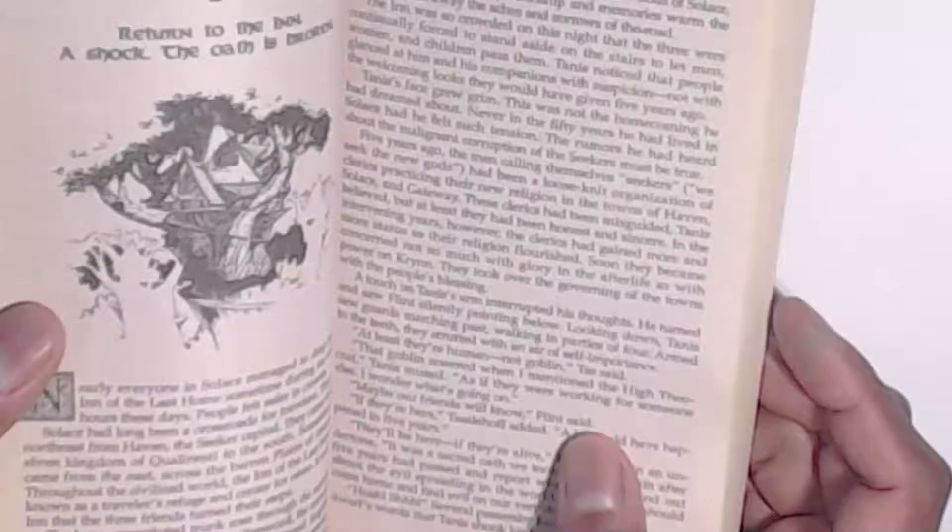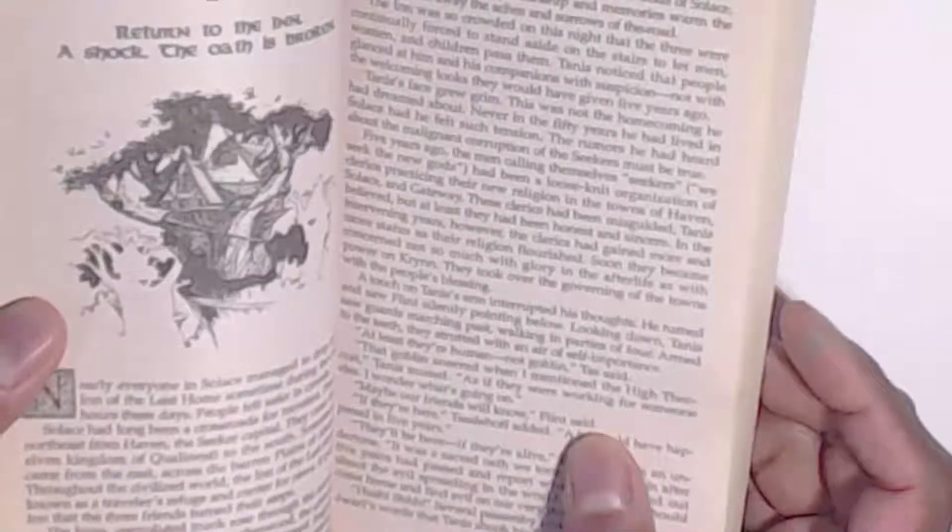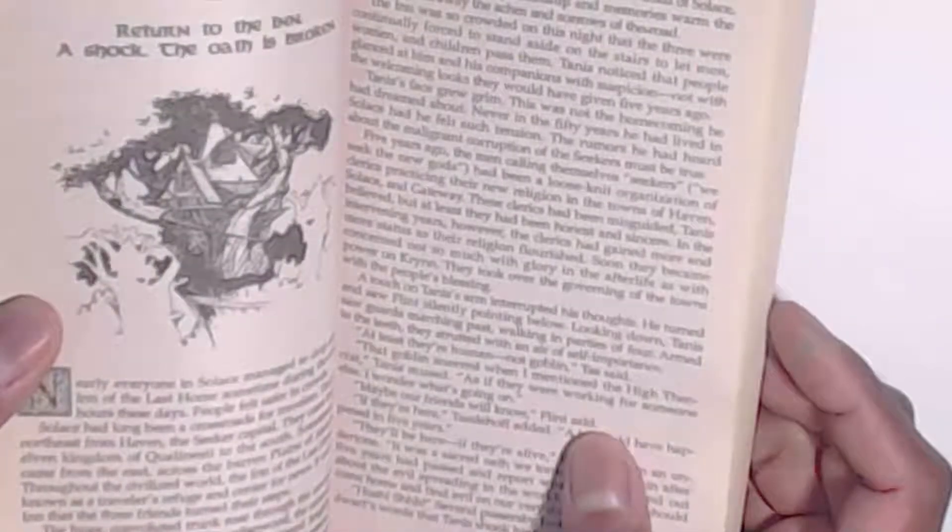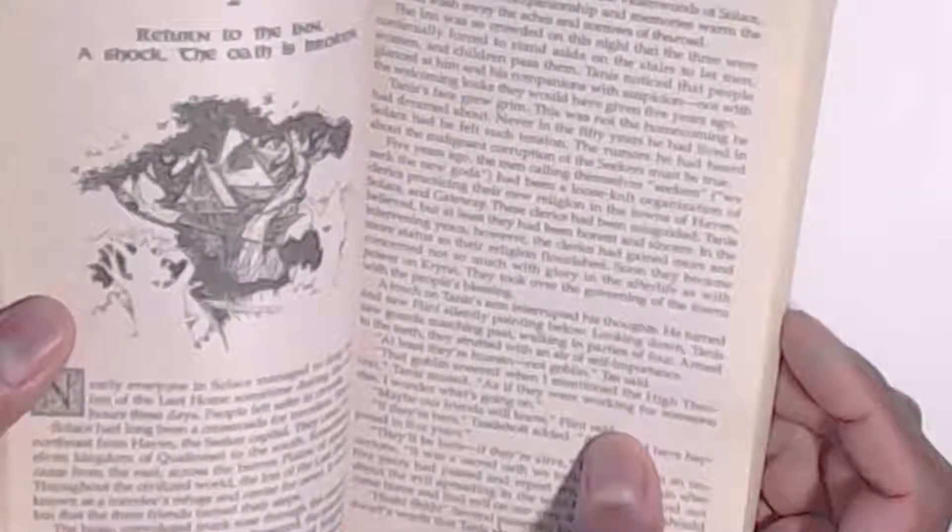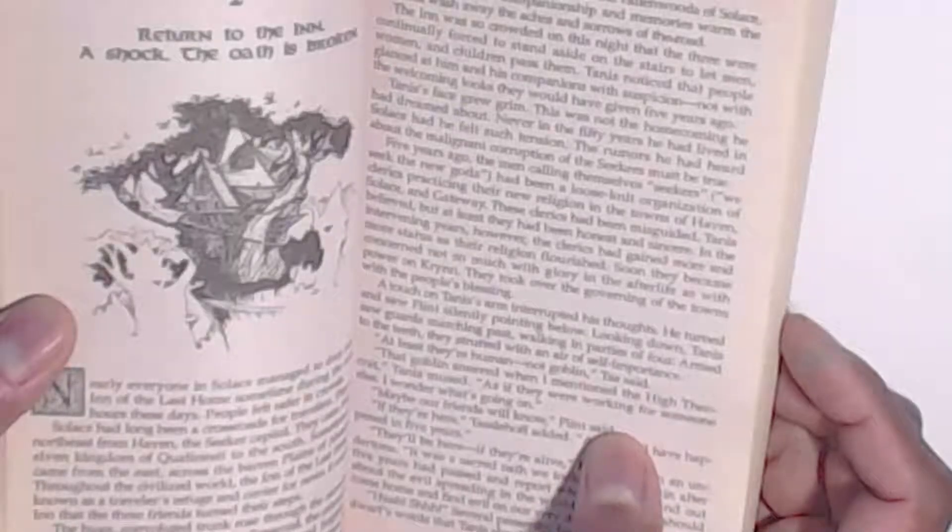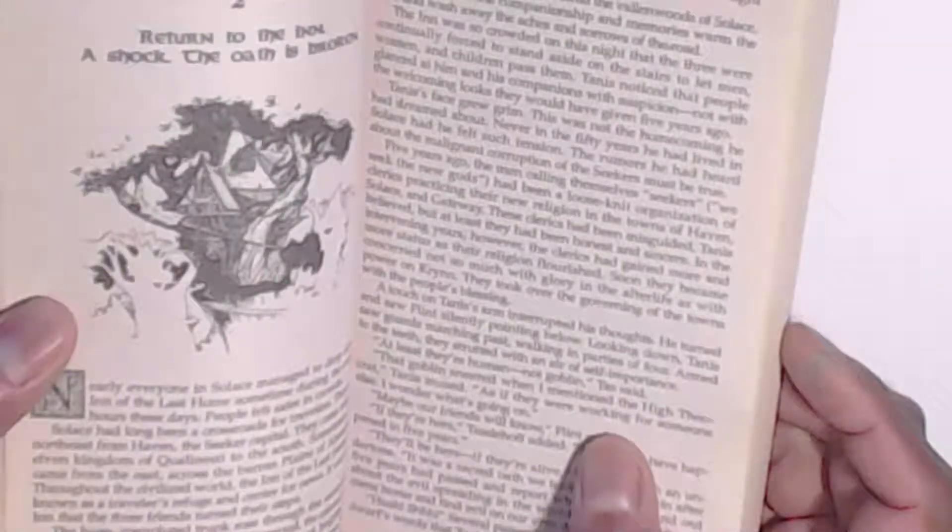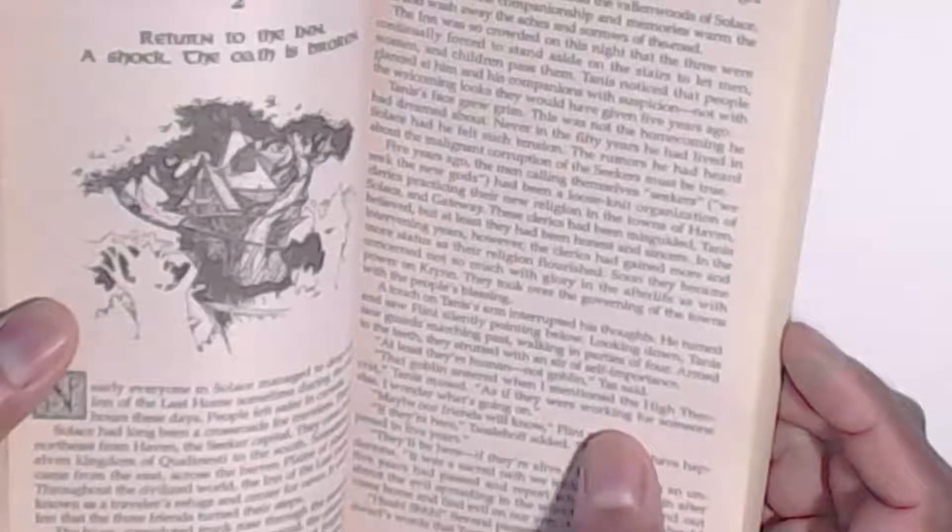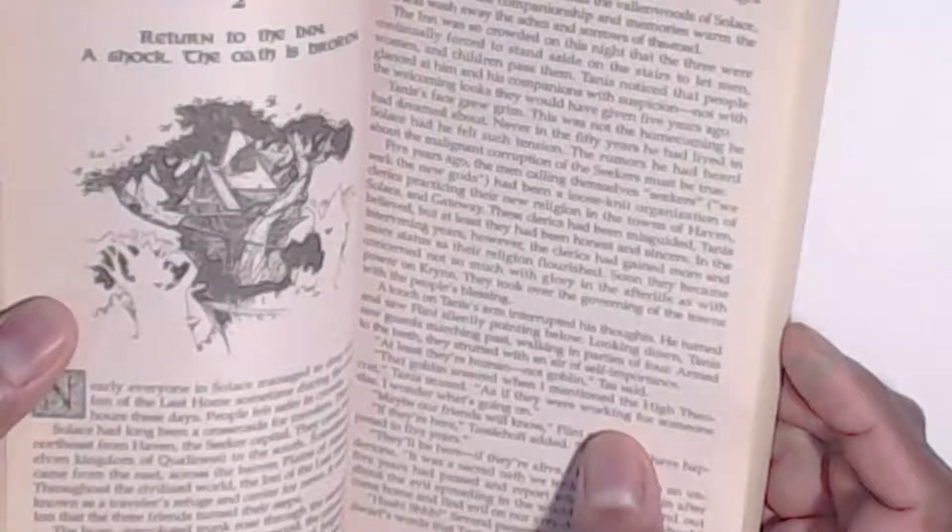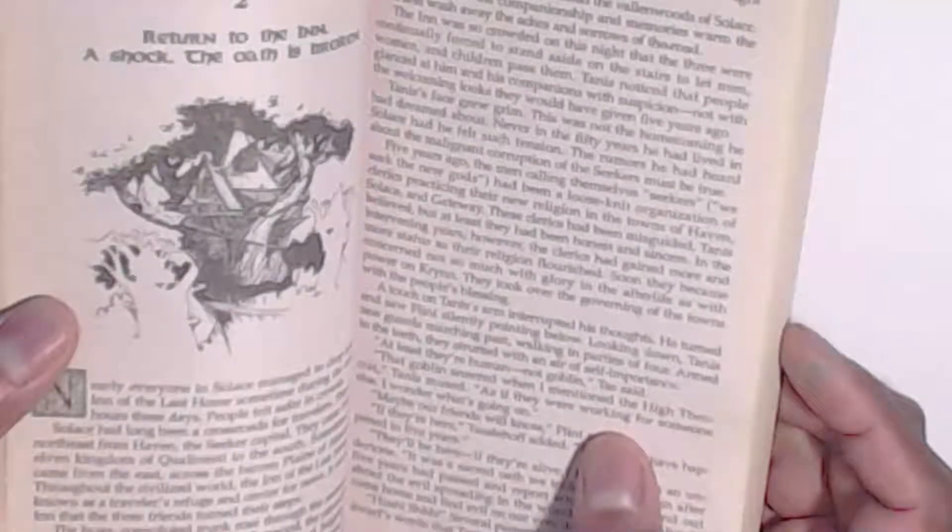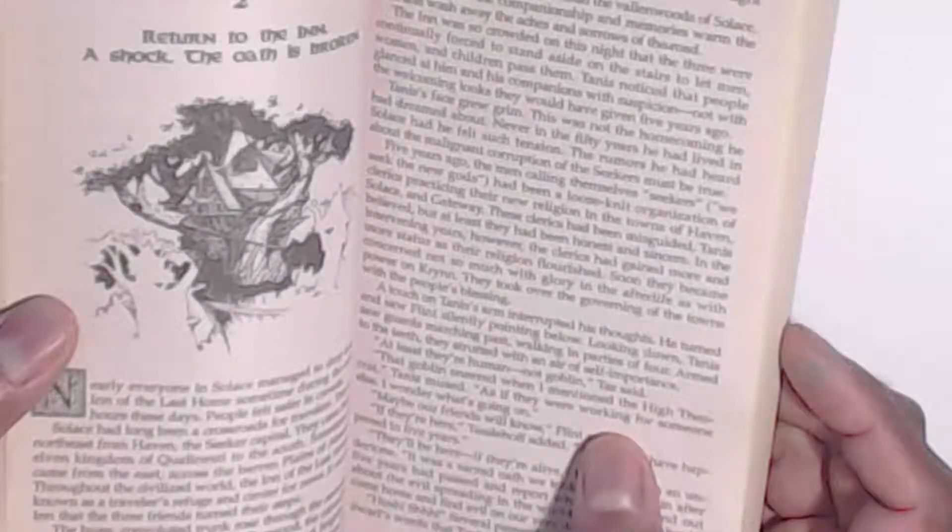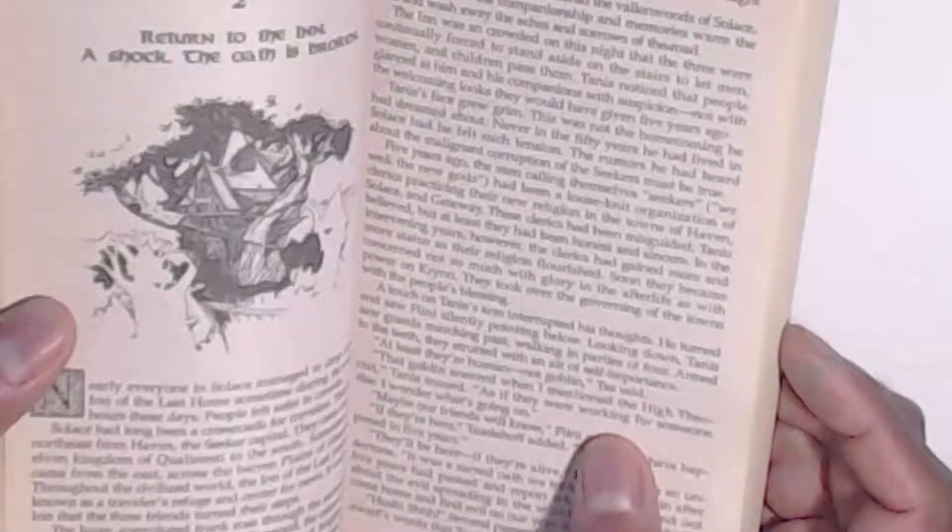Five years ago, the men calling themselves Seekers—we seek the new gods—had been a loose-knit organization of clerics practicing their new religion in the towns of Haven, Solace and Gateway. These clerics had been misguided, Tanis believed, but at least they had been honest and sincere. In the intervening years, however, clerics had gained more and more status as their religion flourished. Soon, they became concerned not so much with the glory of the afterlife as with the power of Kryn. They took over the governing of the towns with the people's blessing.